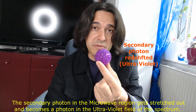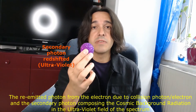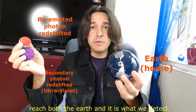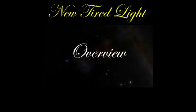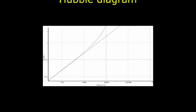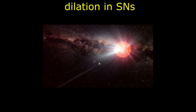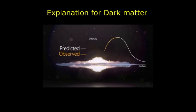The re-emitted photon from the electron due to the photon-electron collision, and the secondary photon composing the cosmic background radiation in the ultraviolet field of the spectrum, both reach the Earth — and that is what we detect. New Tired Light explains the redshift of photons as interaction with the intergalactic medium, predicts an exponential shape to the Hubble diagram, predicts a mechanism by which the cosmic background radiation is generated, predicts time dilation in supernovae, provides an explanation for dark matter, and states that the universe is not expanding.